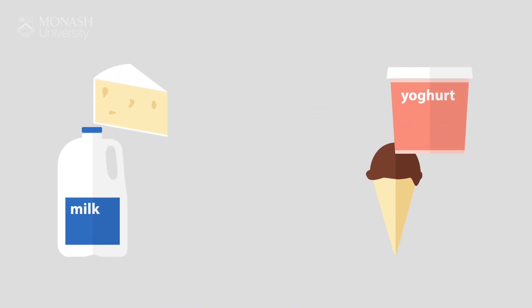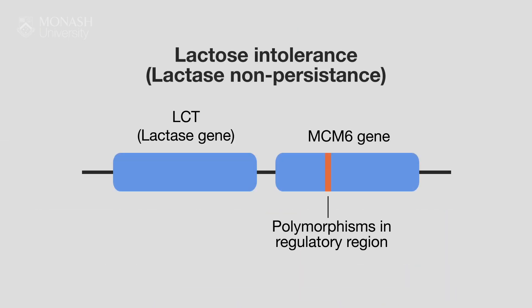Another well-described example is lactose intolerance — the inability to digest the sugar contained in milk, the lactose. We now know this is far more common than we used to think, and that the majority of the human population hasn't got the ability to digest lactose past infancy. This is caused by a polymorphism in the regulatory region of the gene that codes for the enzyme lactase.